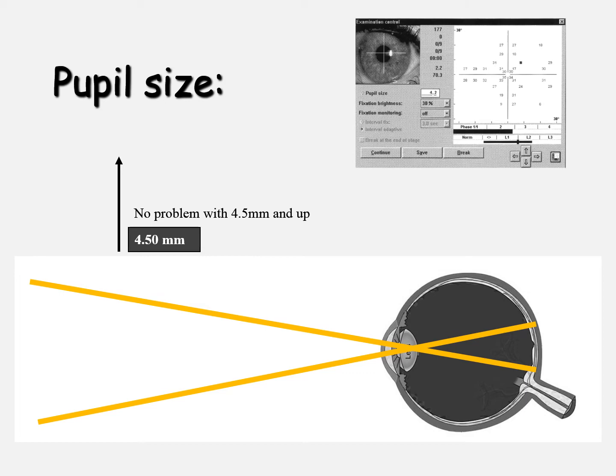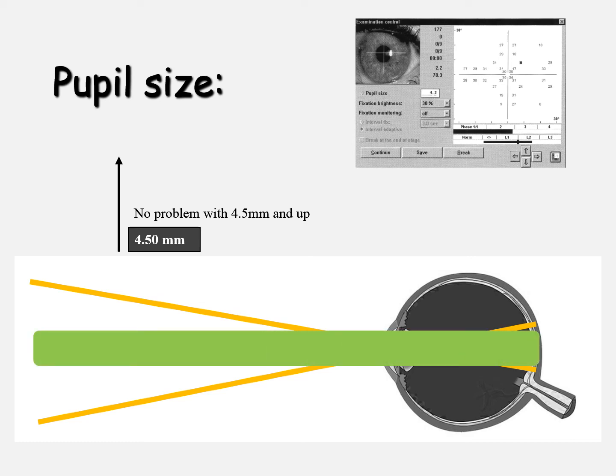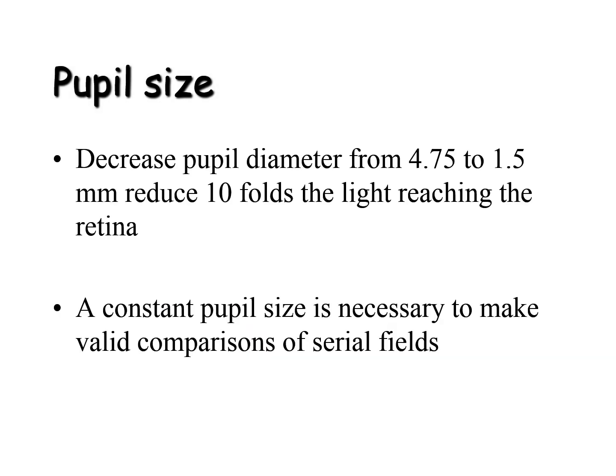Many people think that when the pupil is constricted it will result in a constricted field — this is not correct. As you can see, most of the rays entering the eye are convergent to the nodal point and then divergent again, so constriction of the field does not result from pupillary constriction. When pupil size decreases from 4.75 to 1.5 mm, there will be a ten-fold reduction in the light reaching the retina. A constant pupil size is therefore necessary to make valid comparisons in a series of fields.